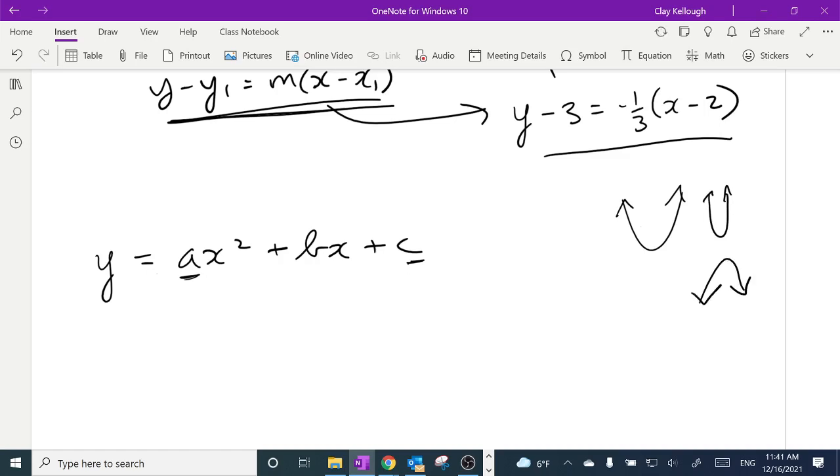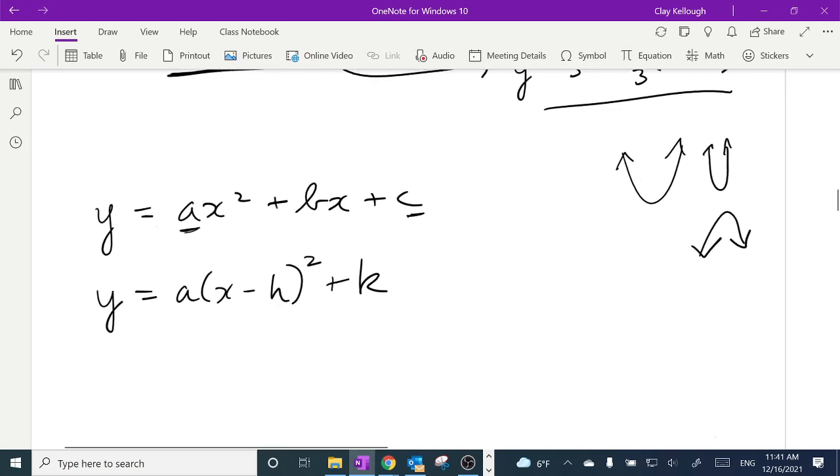It also tells me that the a number tells me whether it's a regular parabola, or if a is a bigger number than 1, it's a skinny parabola. If a is negative, it's an upside-down parabola. So it does tell me a couple things. But by far, the more useful form is this one. It still has that a number that tells me if I'm skinny or wide or right-side-up or upside-down. But now, what does this one tell me? It tells me that the vertex, which is the place where it turns around, that important point, is h, k.